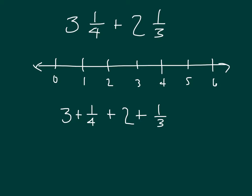I think that you'll agree with me — I can reorder this as 3 plus 2, where we have our whole numbers added together, and then we have plus 1/4 plus 1/3. In this case, we have 3 plus 2 equaling 5, and then we would add together 1/4 plus 1/3. We just need to get a common denominator for that.